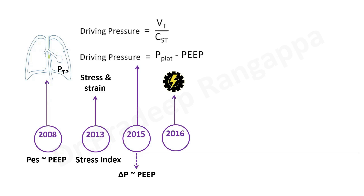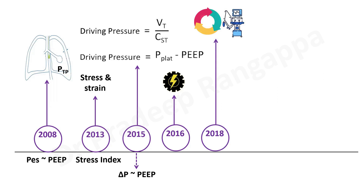What we are seeing is that not one variable influences outcomes in ARDS. Initially we thought low tidal volume, then added PEEP, then plateau pressure, then driving pressure, and now we add more variables. Basically, all the variables a ventilator offers are taken into consideration to derive mechanical power — and respiratory rate, which was not factored into previous dimensions, is now included.